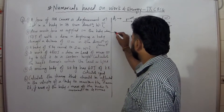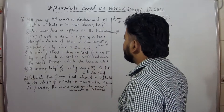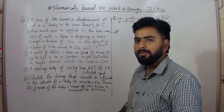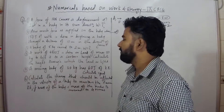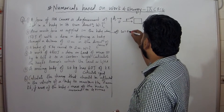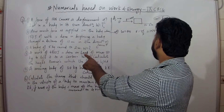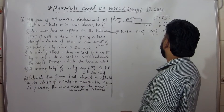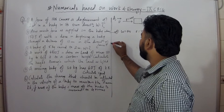Coming to the next one, second question: how much force is applied on a body when 150 joules of work is done and displacement is 10m? Using the same formula, work is equal to force into displacement, so force is equal to work upon displacement. Work done is 150 joules, displacement is 10m, so 15N will be the amount of force applied.